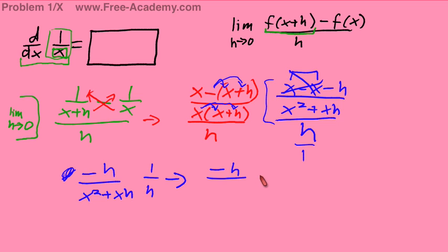This will give us negative h on top, h times x squared plus xh on the bottom. And of course the next great step of this operation is to cancel out our h's. We love canceling out our h's. Now we can apply the limits. The limits, as h goes to 0, of negative 1 over x squared plus x times 0.